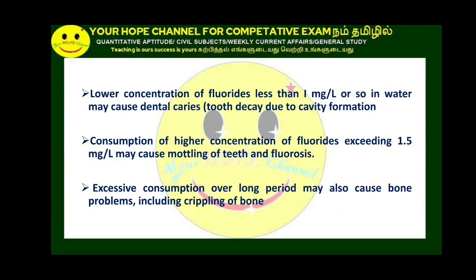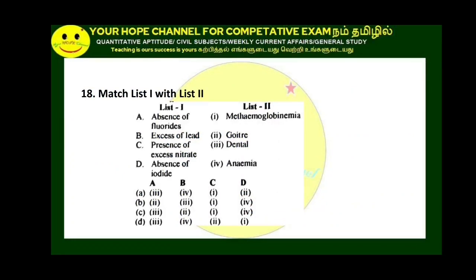If fluoride is below 1 mg/L, it causes dental problems such as tooth decay due to cavity formation. At a higher concentration of about 1.5 mg/L, fluoride causes teeth mottling. The optimum level is approximately 1.2 mg/L.